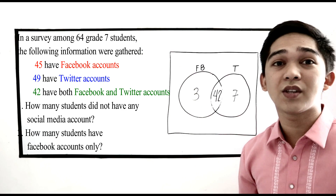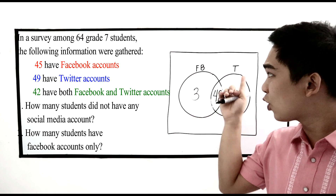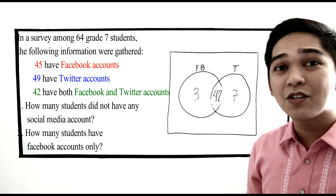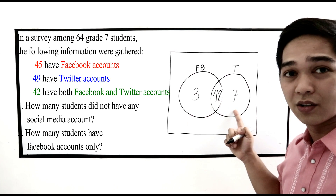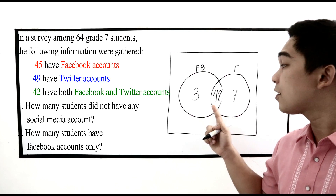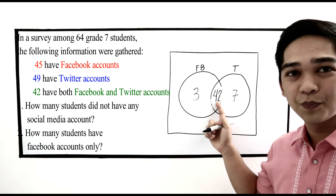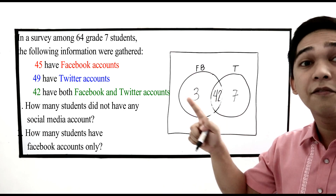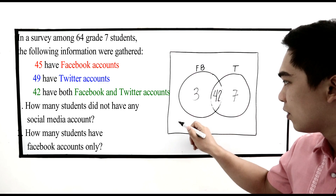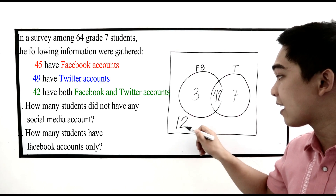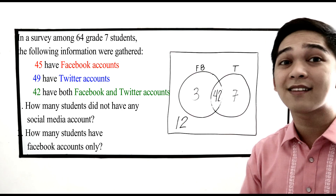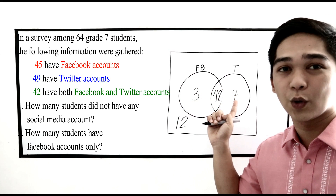64 grade 7 students were surveyed, so the total in our diagram must be 64. We add all the students placed so far: 3 plus 7 equals 10, plus 42 equals 52. So 64 minus 52 equals 12. That 12 goes outside the circles — those are the students who have neither Facebook nor Twitter accounts.